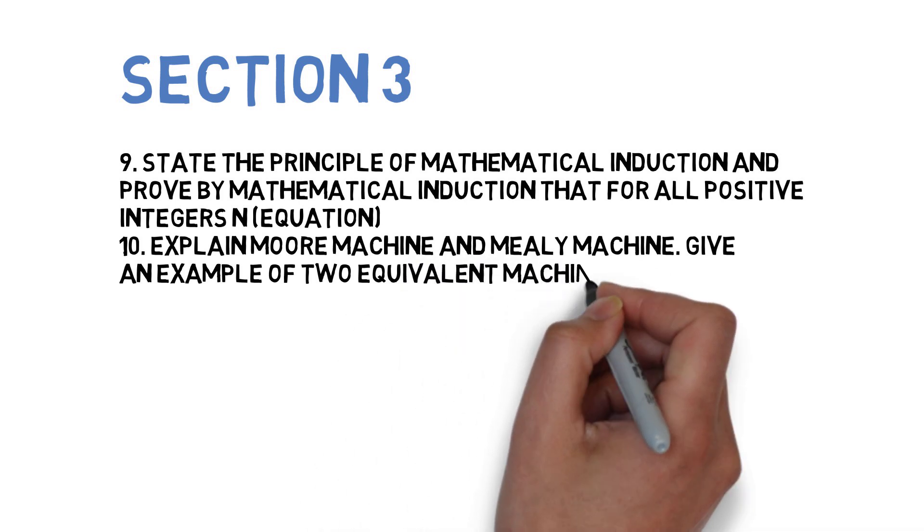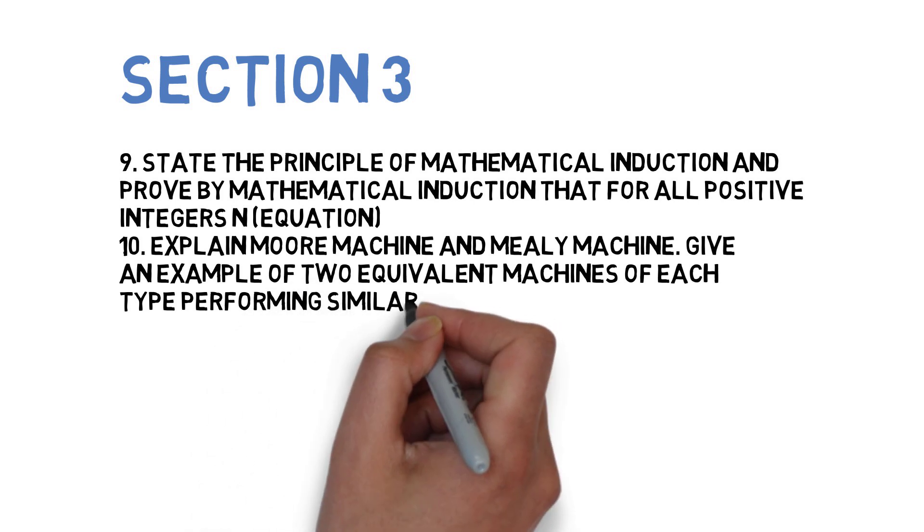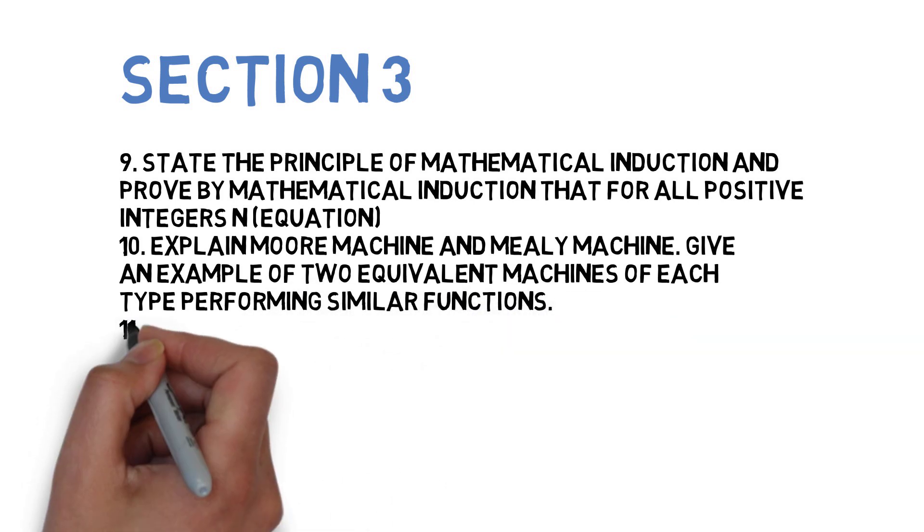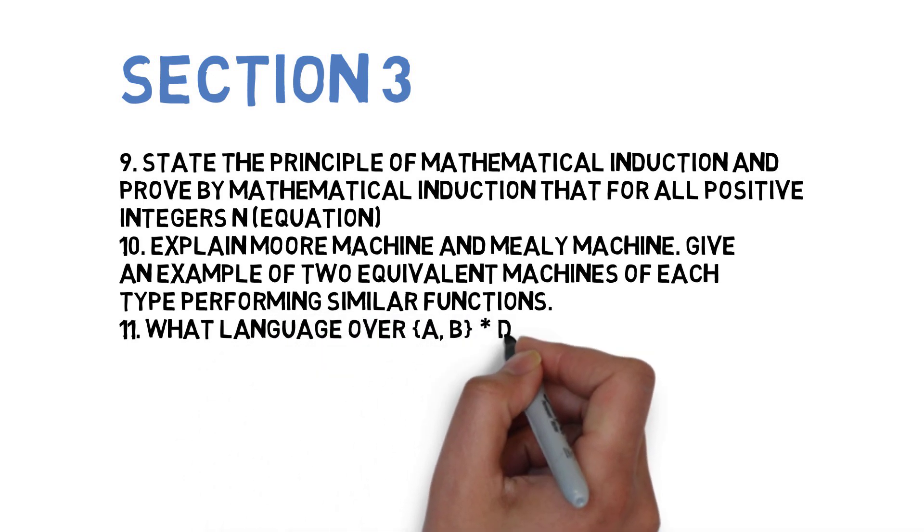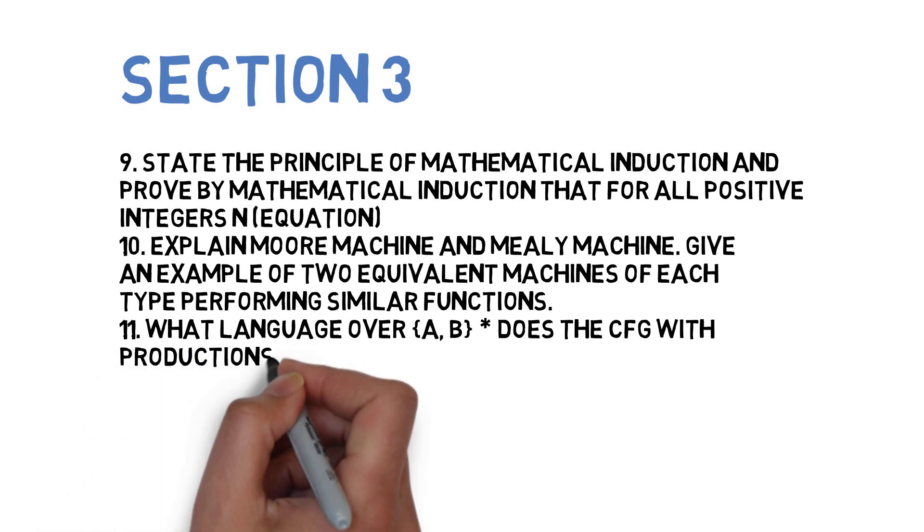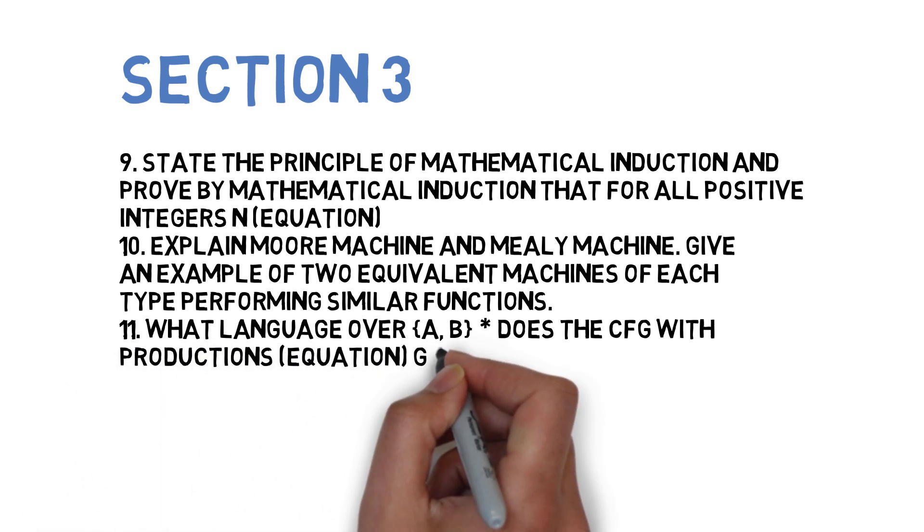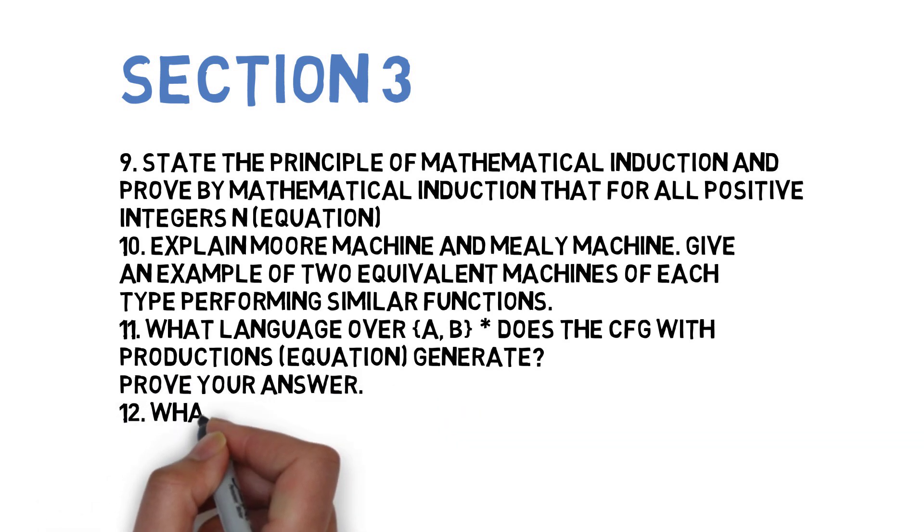11th question is: What language over {a,b}* does the CFG with productions S→aTbT, T→aSb, S generate? Prove your answer. You'll have to get this grammatical form and prove the particular asked question.